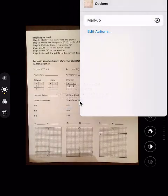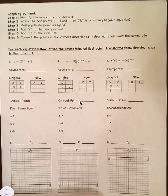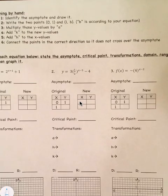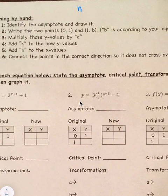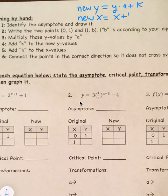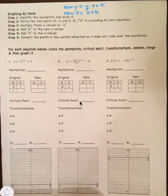And now we get to do the fun stuff. Graphing by hand. So we have six steps. Identify the asymptote and draw it. Write the two points (0,1) and (1,b). b is according to the equation. It's the b value. Multiply the y values by a. Add k to the new y values. Add h to the x values. Connect the points in the correct direction. So basically, something you need to know is the new y value is equal to the old y times a plus k. The new x is equal to x plus h. And you'll see how we use that as we move down.